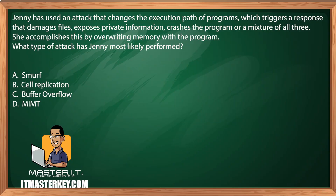Jenny has used an attack that changes the execution path of programs, which triggers a response that damages files, exposes private information, crashes the program, or a mixture of all three. She accomplishes this by overriding memory within the program. What type of attack has Jenny most likely performed?